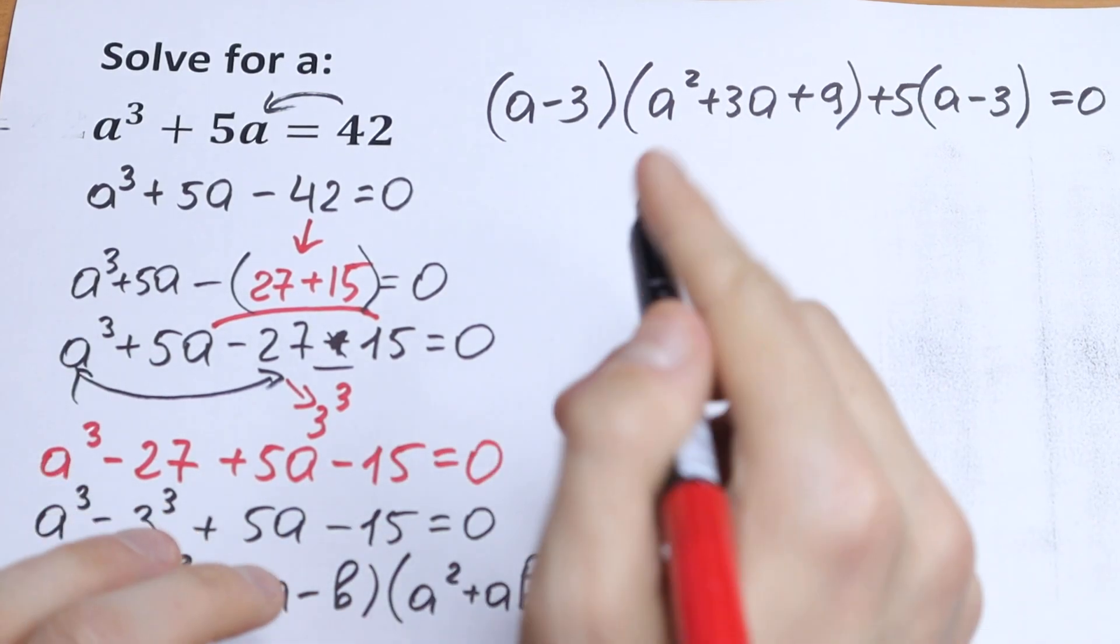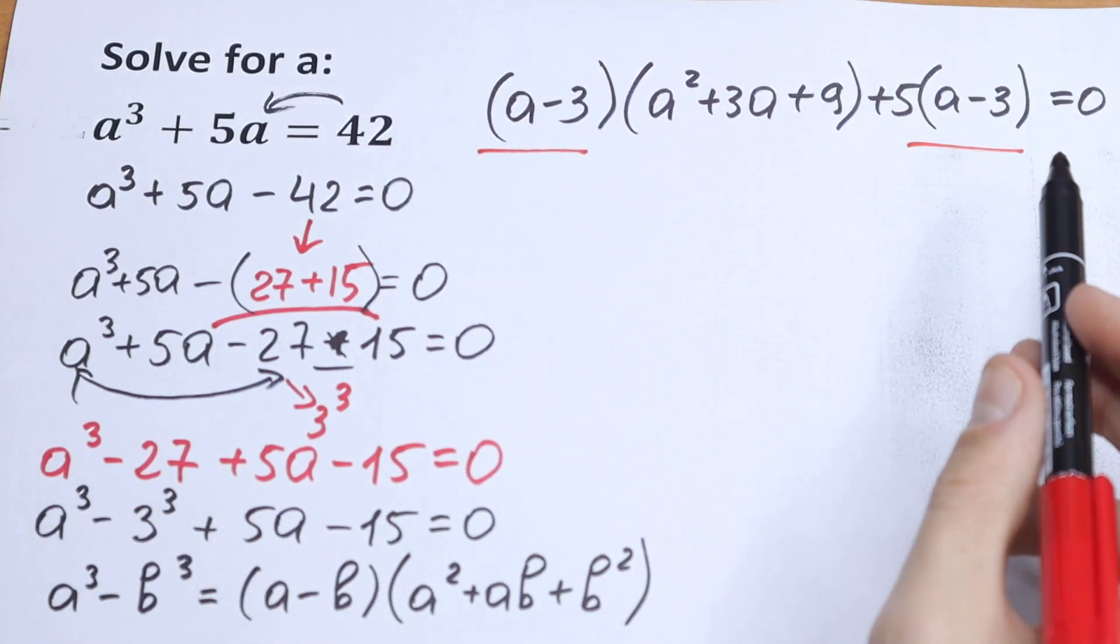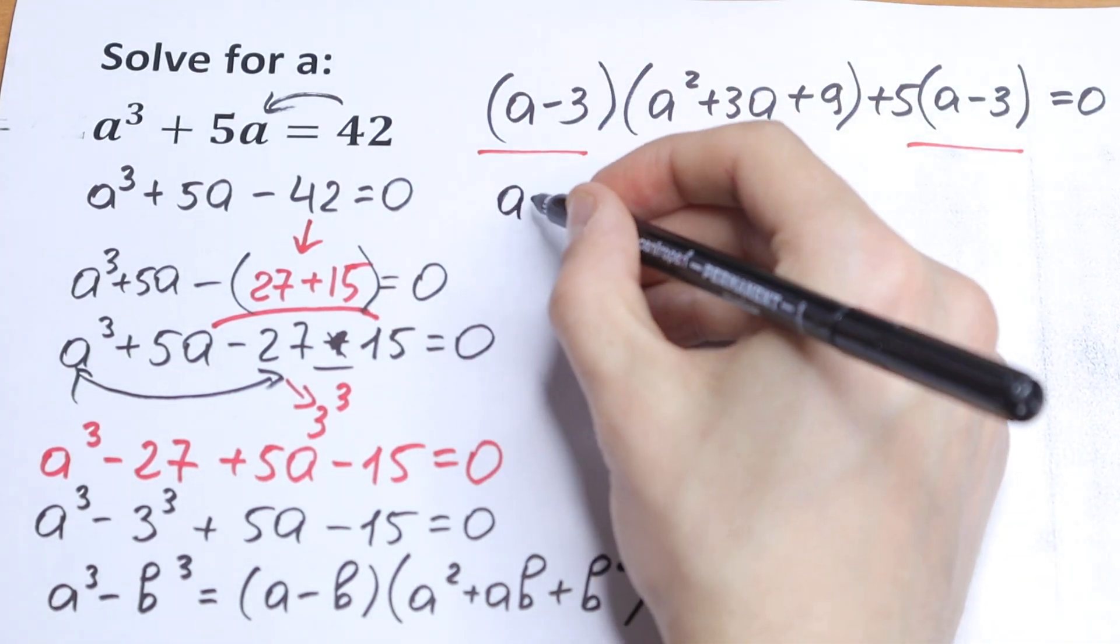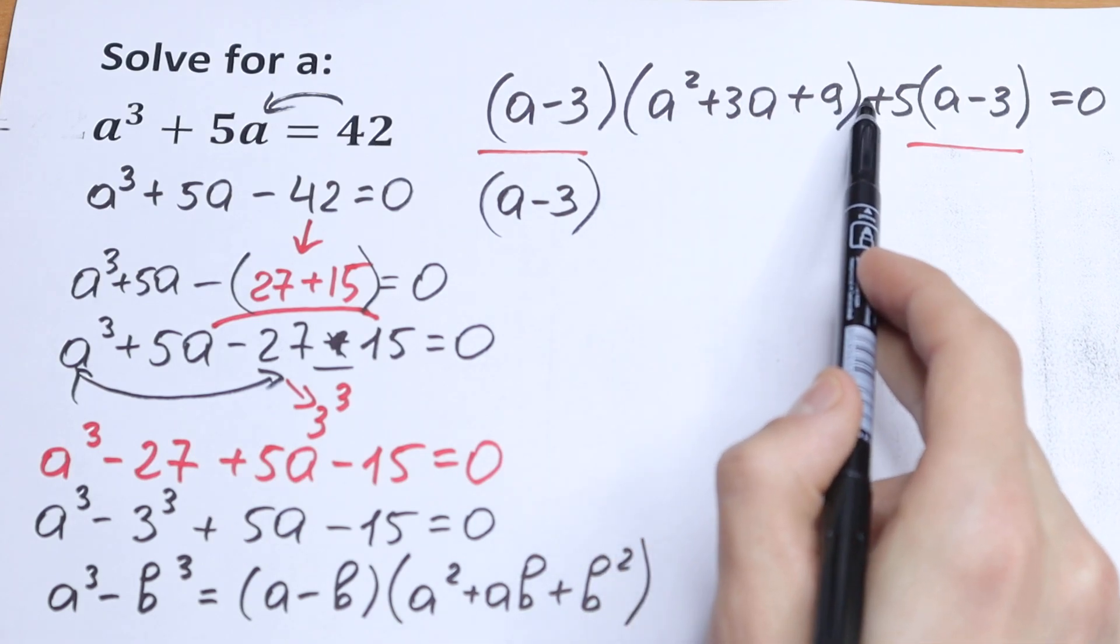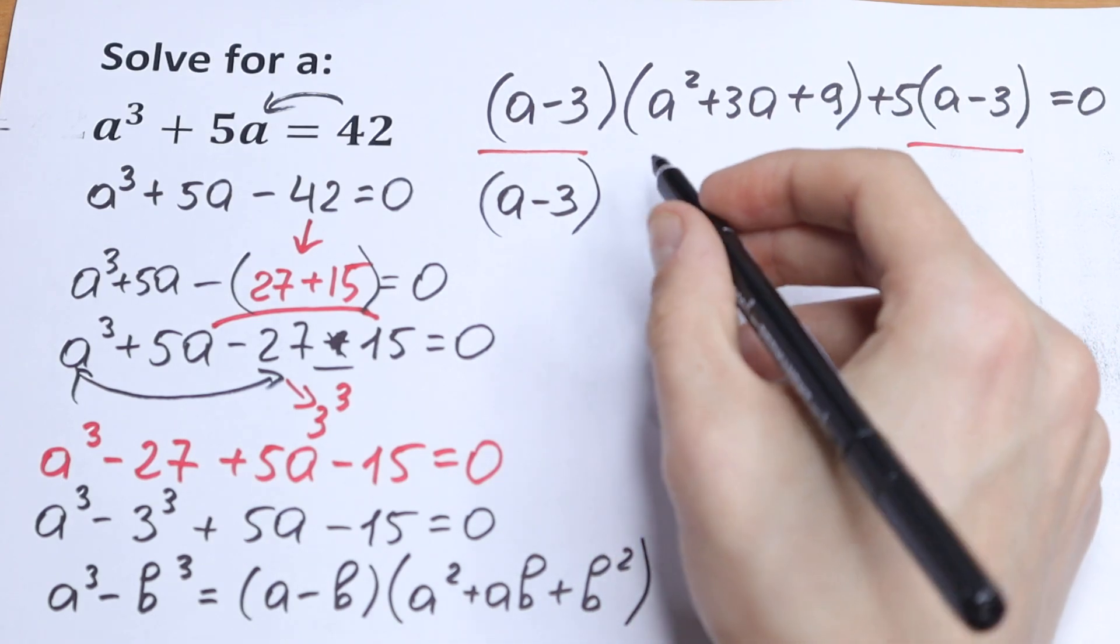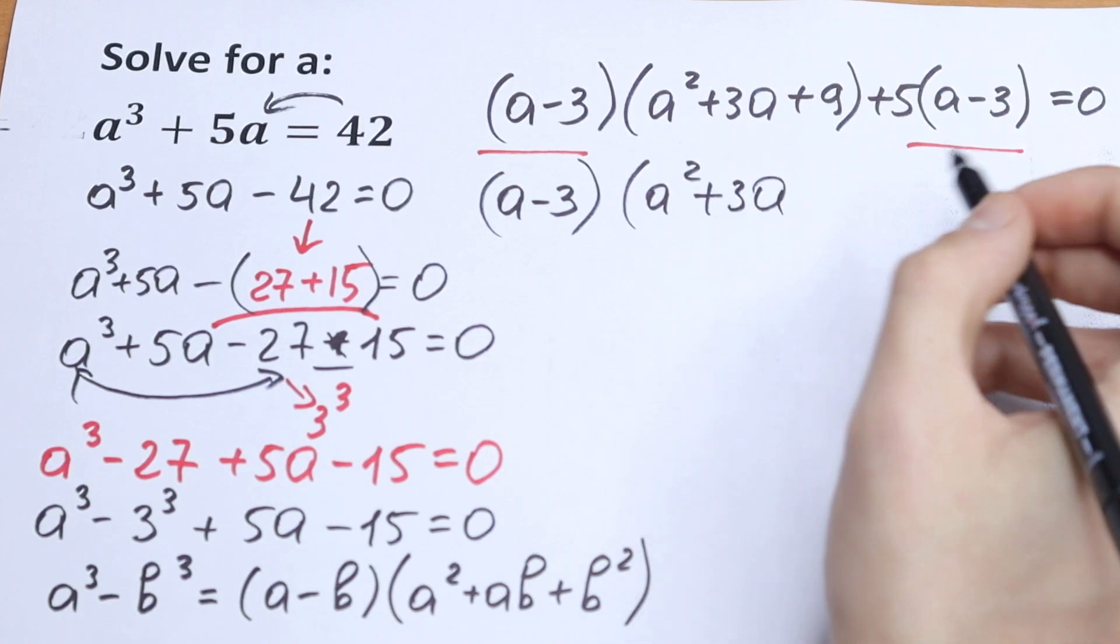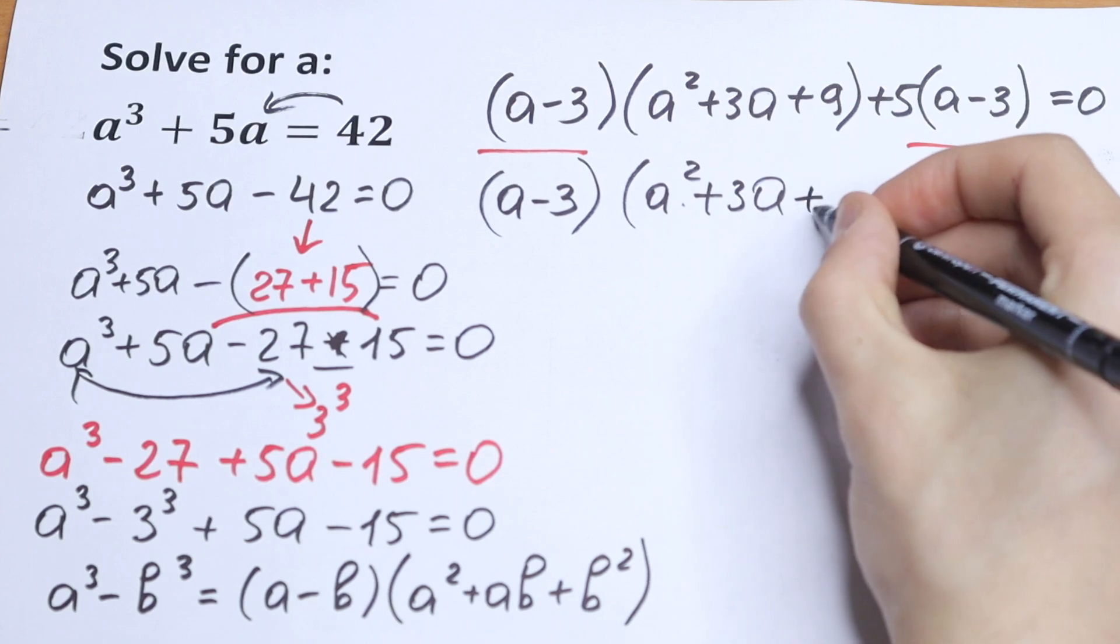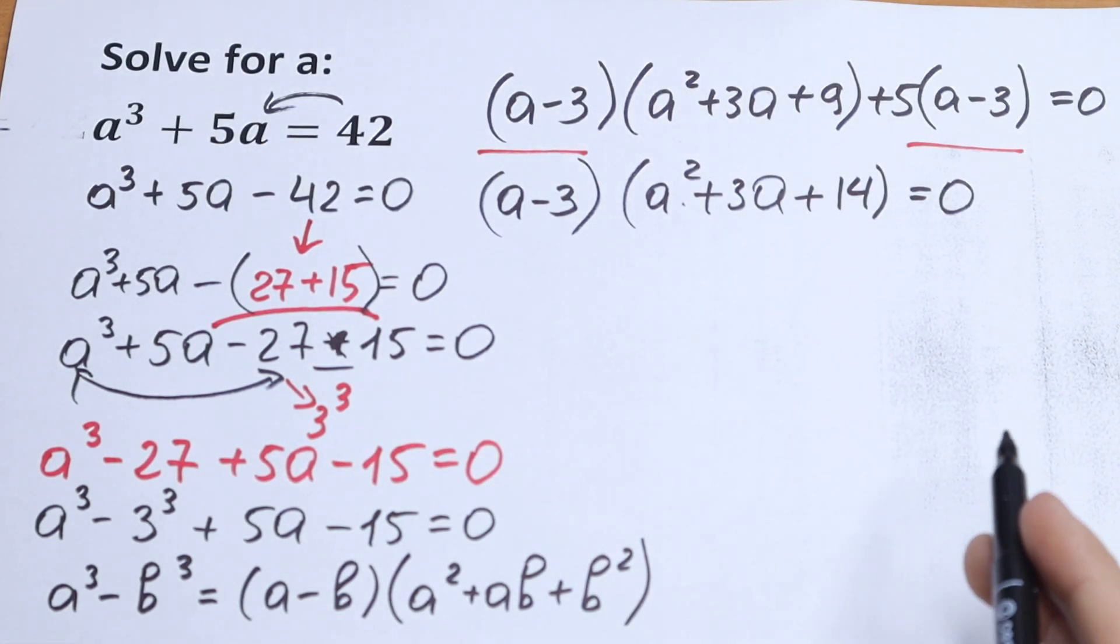Take a look. We have a minus 3 and a minus 3 right here. So we can factor out this a minus 3 as a common. So let's do this. We will have a minus 3. And we have this parentheses and this plus 5. a² plus 3a. And I add this 9 plus 5 plus 14 equal to 0. Really good case.